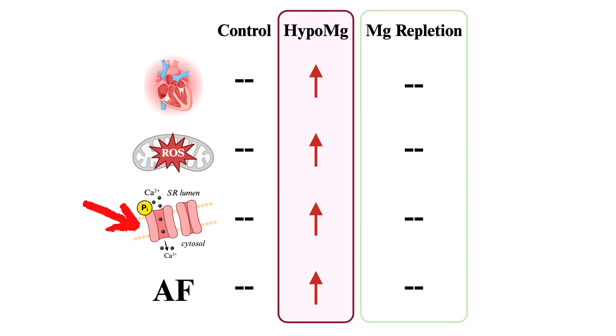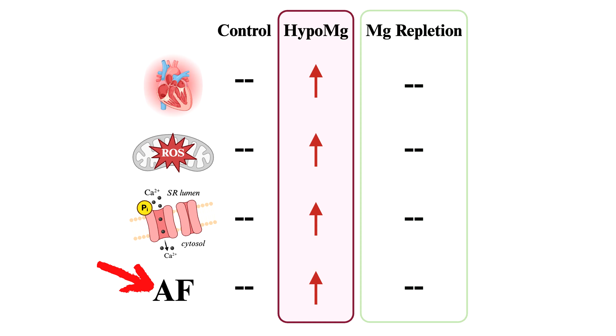Importantly, this inflammation and oxidative stress is reversible with magnesium repletion. Therefore, in this study, we looked into the impact of hypomagnesemia on atrial fibrillation risk and its potential reversibility with magnesium repletion. In our study, we had three groups of mice: one on normal diet, one on low magnesium diet, and another on low magnesium diet followed by normal diet, or magnesium repletion. We measured inflammation, oxidative stress, and ryanodine receptor phosphorylation and AFib inducibility in these mice, and found that hypomagnesemia increases AFib risk and it is reversible with magnesium repletion.